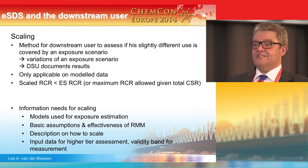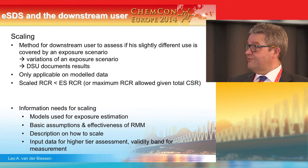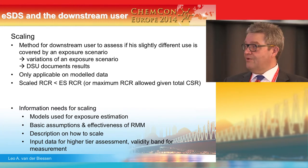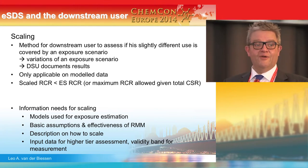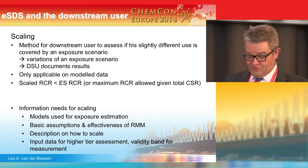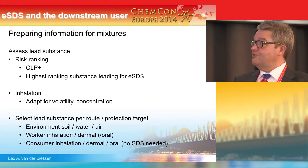Ideally, your ESDS appendix in Section 4 would contain a list of basic assumptions and effectiveness for risk management measures, and also a description on how to scale. If higher-tier models are used — for instance, the Advanced Reach model or Stoffer Manager — ideally you will get a link to where you can find the exact input data so you can verify and make a scaling yourself.